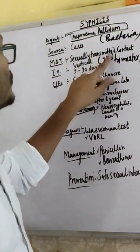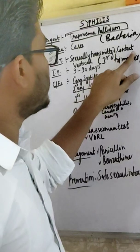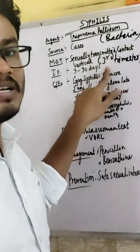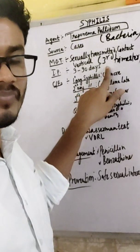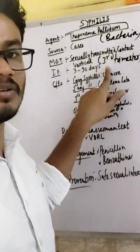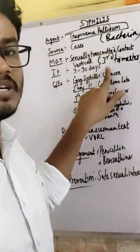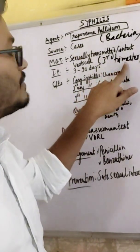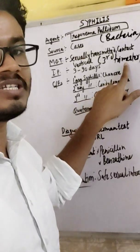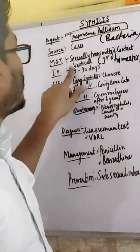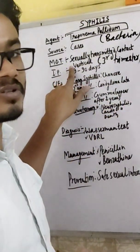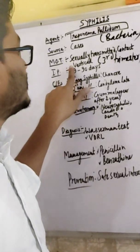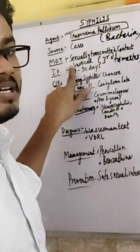Transmission is mainly through sexual contact. It is also vertically transmitted — during pregnancy, the pregnant mother will transmit it to the child in the third trimester.